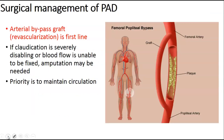Surgical management for peripheral arterial disease: sometimes there is too much plaque to go in and use a balloon to compress it. Depending on the severity of the blockage, they may do an arterial bypass graft, also known as revascularization, which is typically going to be first line. If you hear revascularization, think bypass graft. If the claudication is severe and can't be fixed, amputation might also be needed. The priority in the end is to try to maintain circulation.